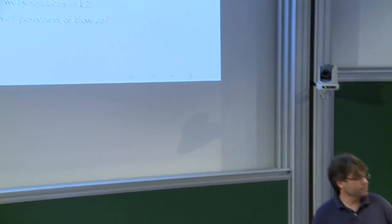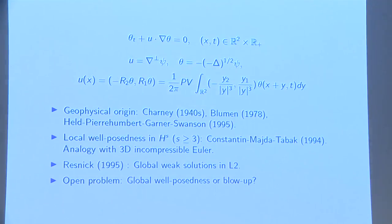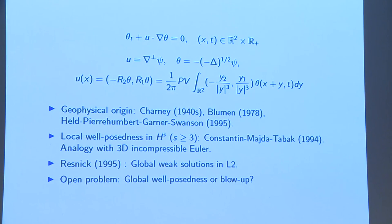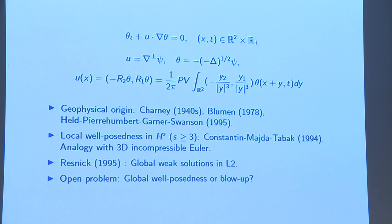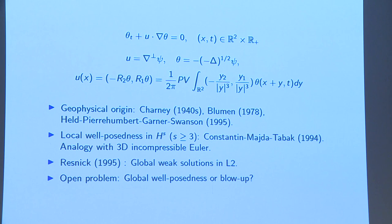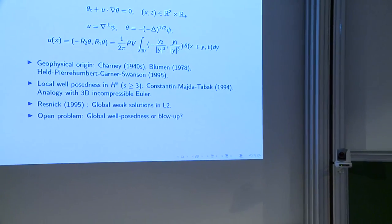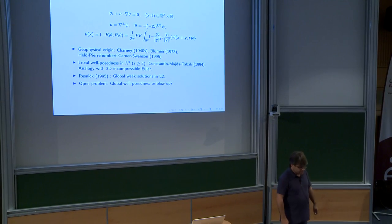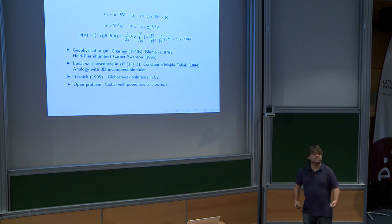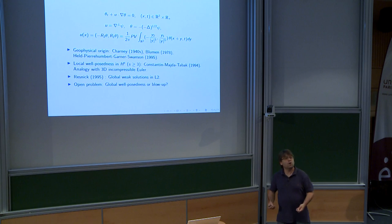The quasi-geostrophic model models the dynamics of big masses of air in the mid-latitudes, where the Coriolis force plays an important role. This is the quasi-geostrophic equation — a three-dimensional equation — and the dynamics that happens at the surface is what is known as the surface quasi-geostrophic equation.